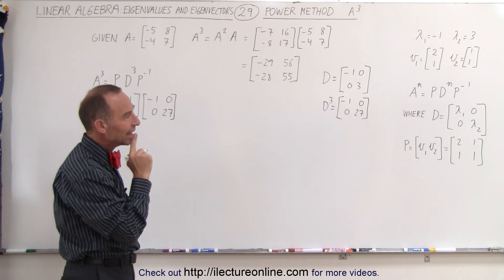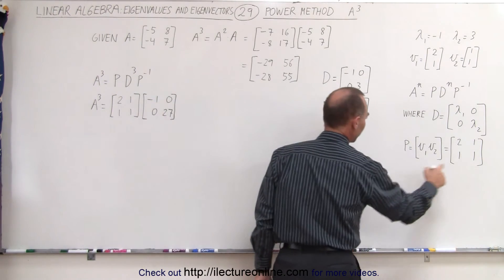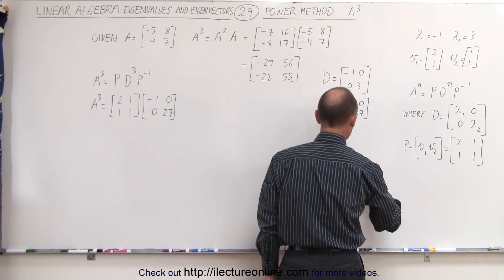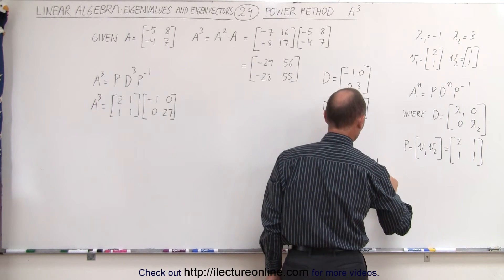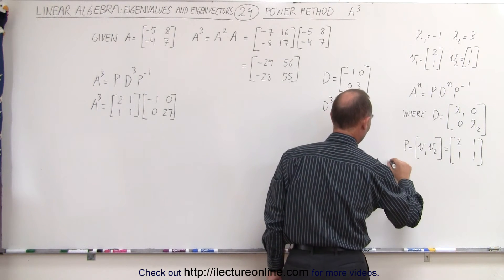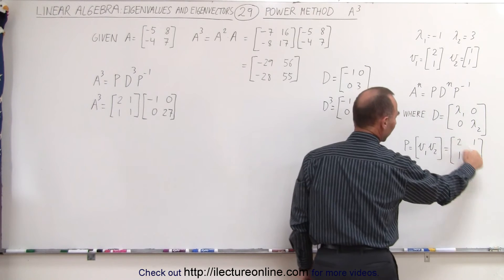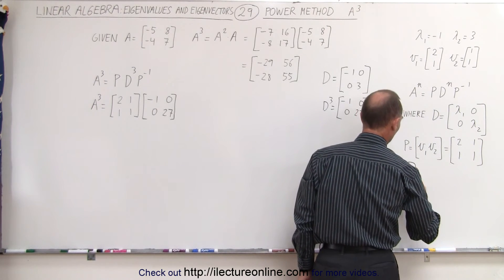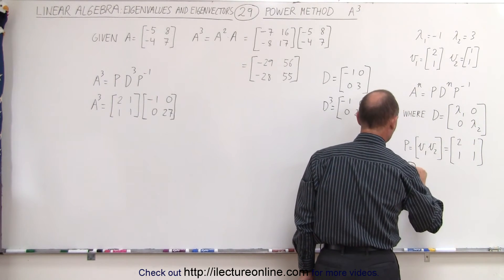And now we also need the inverse of P. If P is equal to that, the inverse of P is equal to 1 over the determinant times these elements interchanged and negative signs on these.